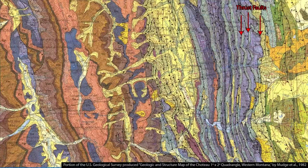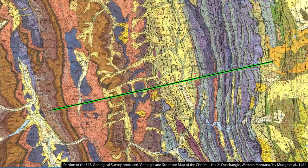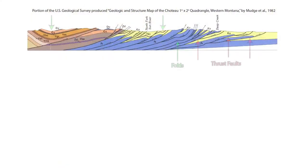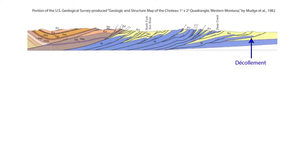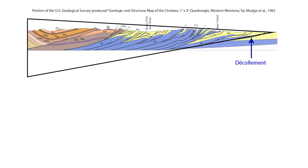Looking at the geologic map of the area, you can see a multitude of thrust faults, with teeth placed on the hanging wall side. Only a few folds are shown in red; many more exist but aren't shown due to scale. In the cross-section through the belt, red arrows mark thrust and reverse faults, green arrows mark synclines and anticlines, and the lowest-most thrust — called the décollement — separates deformed fold and thrust belt rocks above from undeformed rocks below. The deformed rocks in the fold and thrust belt approximate a wedge, with the décollement defining the base and the land surface defining the top.